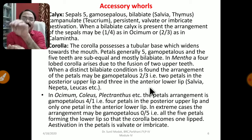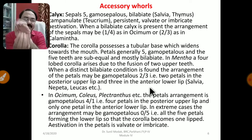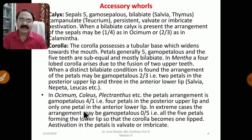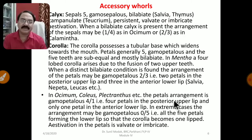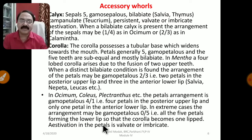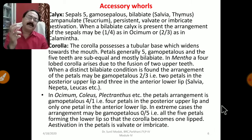When a distinct bilabiate condition is found, the petal arrangement may be two-plus-three — two petals in the posterior upper lip and three in the anterior lower lip — that is why it is called bilabiate. In Ocimum (Tulsi), the petal arrangement is four-plus-one — four petals in the posterior upper lip and one petal in the anterior lower lip. In extreme cases the arrangement may be zero-plus-five, meaning all five petals form the lower lip, making the corolla one-lipped. Petal aestivation is valvate or imbricate.